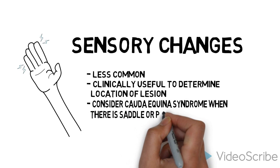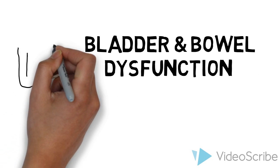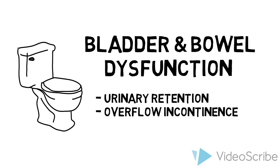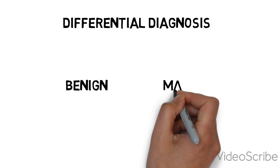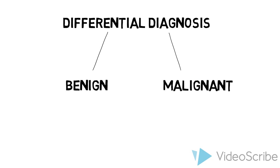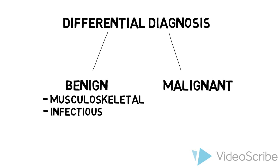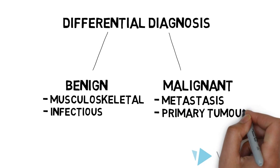Saddle or perianal anesthesia may indicate cauda equina syndrome. Bladder and bowel dysfunction is present in up to half of spinal cord compression patients, and may present as urinary retention and overflow incontinence. Regarding differential diagnosis of back pain in oncology patients: back pain in a cancer patient should always be taken seriously. It is important to consider benign versus malignant causes. Benign causes include musculoskeletal causes such as soft tissue injuries, spinal stenosis, or disc herniations, as well as infectious causes such as epidural abscesses. Malignant causes are commonly from metastatic disease and less commonly primary tumors in the spine.